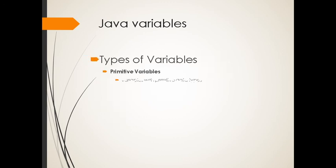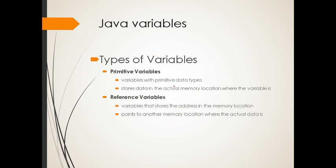We need to discuss the types of variables. We have primitive variables and reference variables. Primitive variables are variables with primitive data types. They store data in actual memory allocation or memory location where the variable is. Reference variables store the address in the memory location and point to another memory location where the actual data is. Don't worry, we will discuss more about reference variables in our next topic.